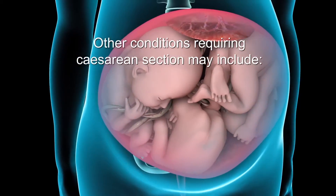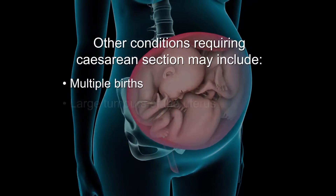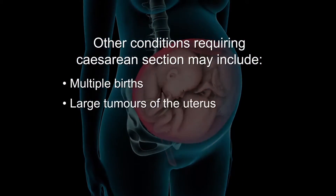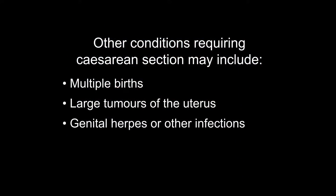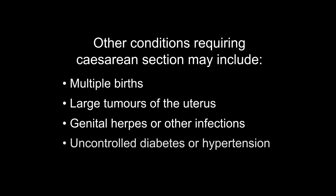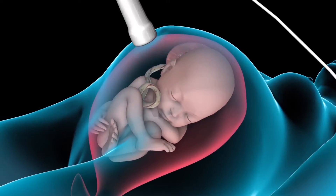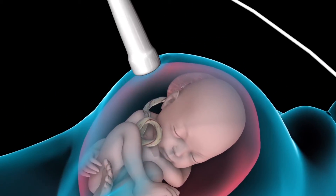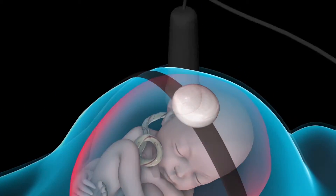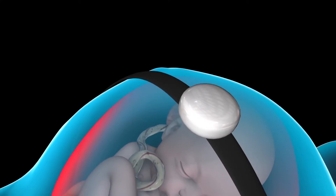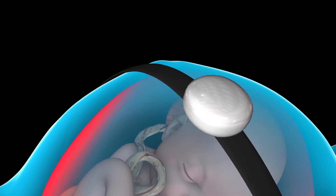Other conditions that may require a caesarean section include multiple births, large tumours of the uterus, genital herpes or other infections, or medical problems such as uncontrolled diabetes or hypertension. Your doctor may use ultrasound testing and a fetal heart monitor to help decide whether your baby should be delivered by caesarean.